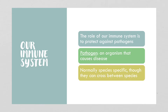The role of our immune system is to protect us against pathogens. A pathogen is an organism that causes disease. They're normally species specific, but they can cross between species, and that's known as zoonosis. We'll talk about that a little bit later.